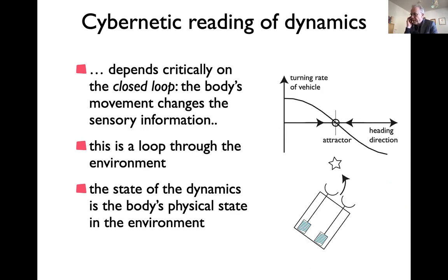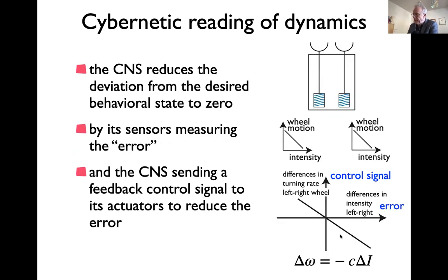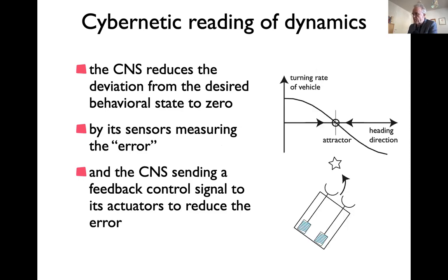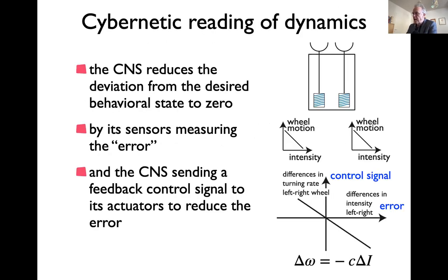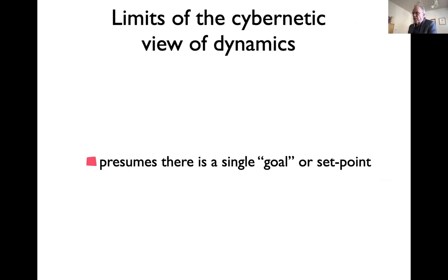This closed-loop interpretation is valid and relies on using a model of the world to predict the sensory consequence of the robot turning. However, the cybernetic view presupposes a well-defined goal — it's about ensuring the goal is achieved, not about determining the goal. The views I'll be talking about are not limited to this perspective. This is a point of departure: what we'll look at in the rest of the course will go beyond cybernetics.